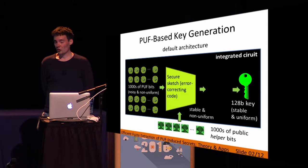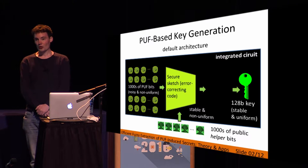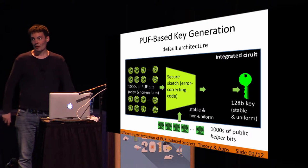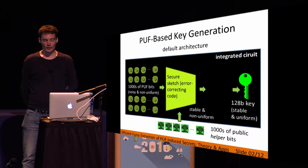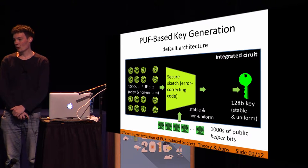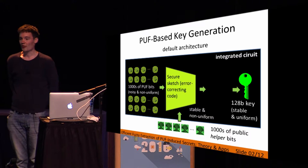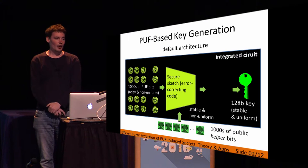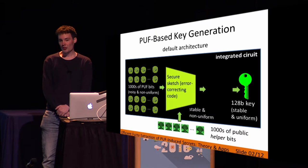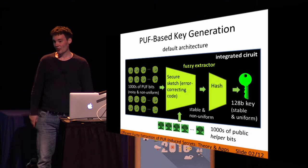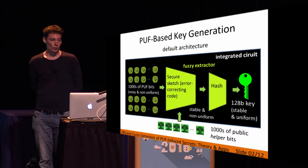The fuzzy extractor consists of two steps. First, there is the error correction, where we get rid of the noisiness problem. The secure sketch is the building block to do that, and it relies on an error-correcting code. It will also need some public helper data — thousands of public helper bits that are available to the attacker, who has read access to these bits. We end up with a stable secret, but it is still non-uniform.